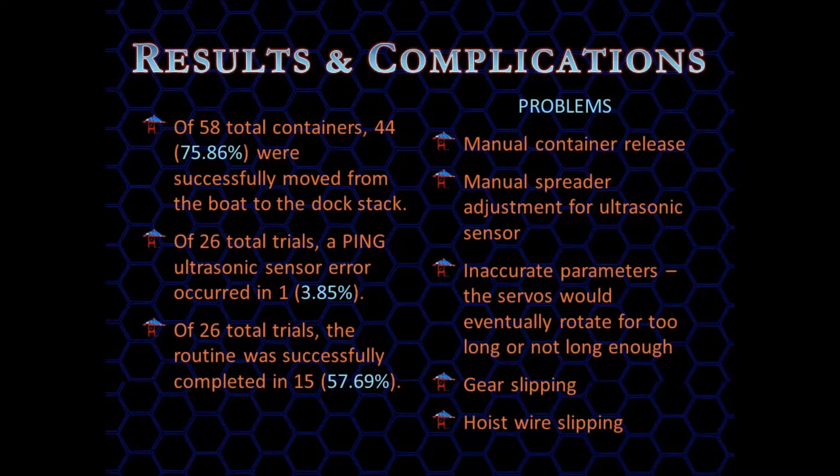Some of the complications or required manual adjustments included the manual spreader release of the containers, manual spreader alignment, inaccurate parameters, trolley gear slipping, and hoist wire slipping.